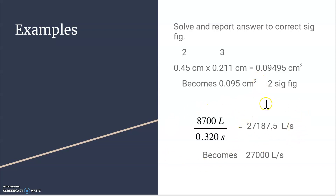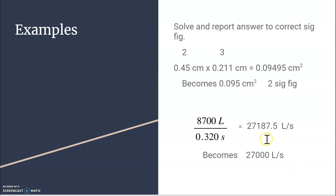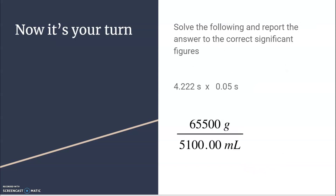The next example: do the math normally, then go back and count sig figs. 8700 is a multiple of ten, so counting left to right — one, two significant figures. The bottom number 0.320 has three significant figures. So I round to two significant figures. I have to stop at the 7; what do I do with the remaining numbers? Less than five, so I change those into zeros. This becomes 27,000 liters per second.